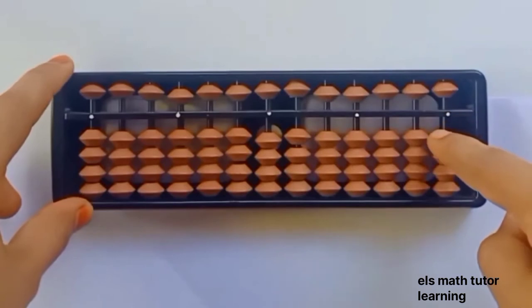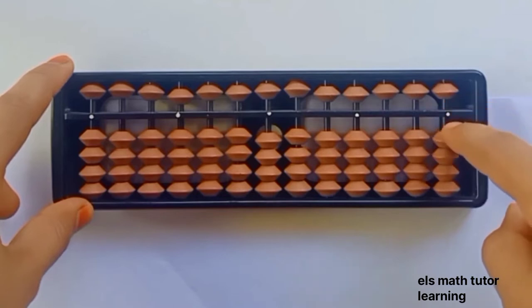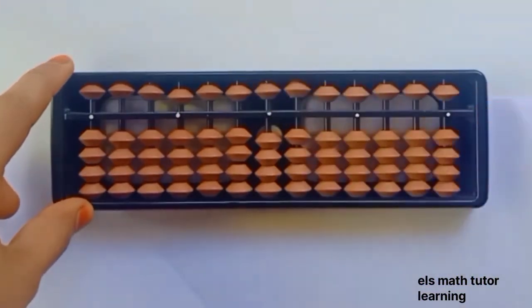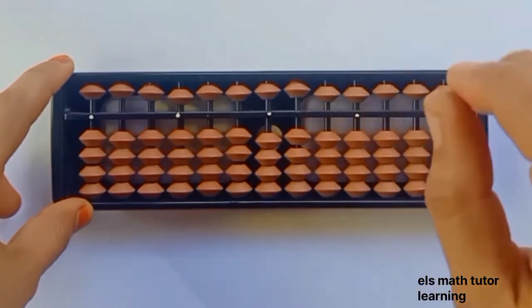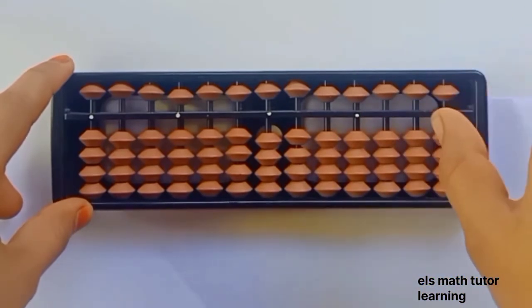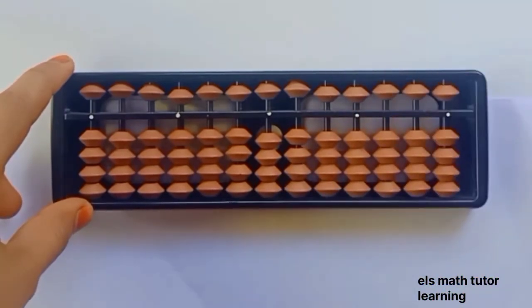Now lower bead, this is called earth bead, each value of one. See, abacus is not only skill. Most important are speed and accuracy. Yes, you should increase your speed, so you should follow certain rules.